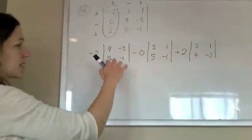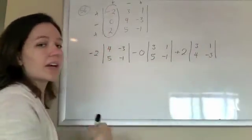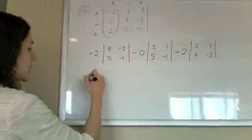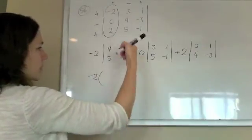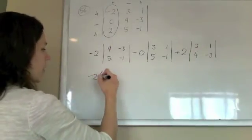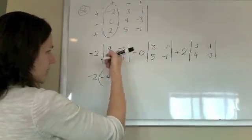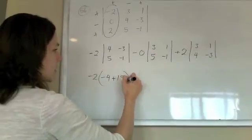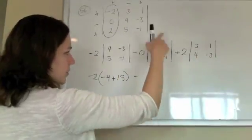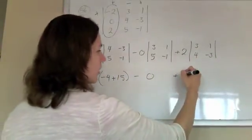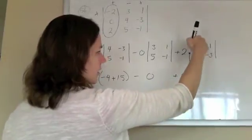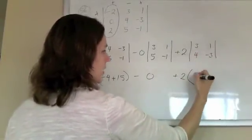So, now I have all these little determinants, and I can find those 2 by 2s really easy, just by multiplying the diagonals and subtracting. So, I have negative 4 minus a minus 15, so plus 15. This one here is just going to be 0, because it doesn't matter. And then, negative 9 minus 4.